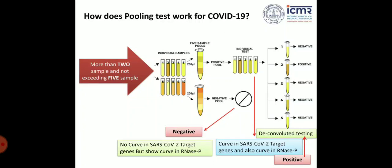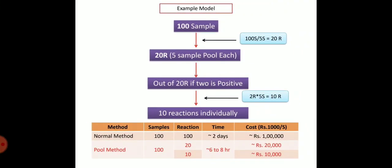If the curve is positive in both the target gene and the RNase P internal control, then the pool is positive. You then have to do deconvolution testing — meaning you separate all five samples and test them individually. You then see which individual sample is positive. For example, two might be positive and the remaining three negative. This is how you can reduce workload, cost, and time.